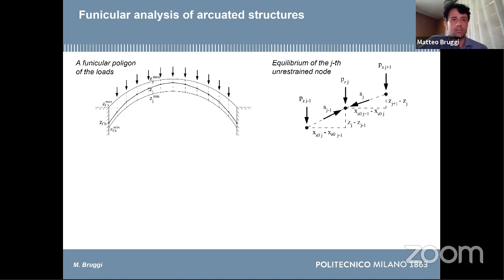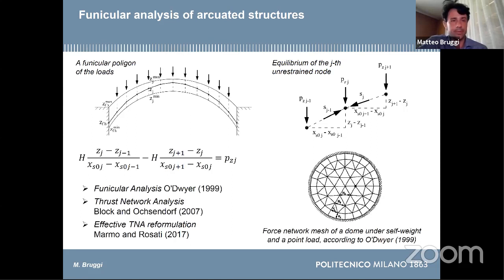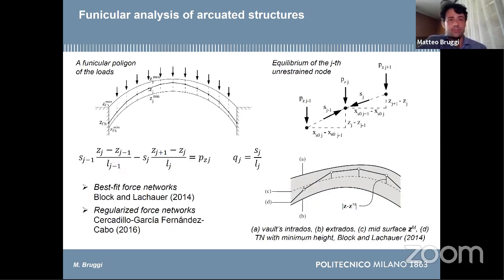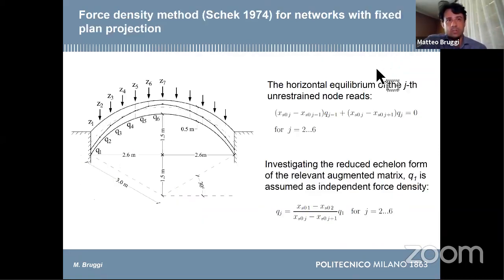This can be done introducing the thrust, the horizontal component of the reaction, as done in the thrust network analysis method, but one can also use the force density method. I would refer to those two works that implement polygons or networks with grids that have fixed plan projection. They mainly deal with the control of the height of the nodes performed on average, and I would like to investigate the use of mathematical programming to do it point by point along the lines of this work.